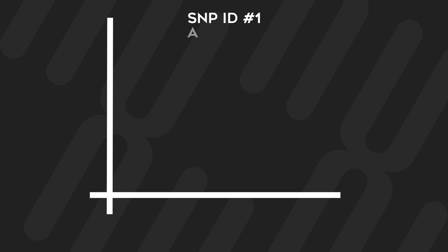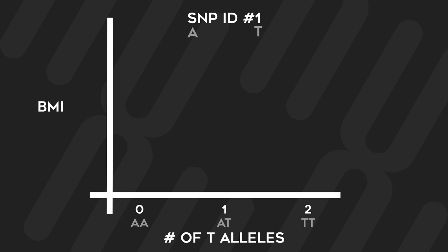Next, the actual association analysis is done. For every SNP in the dataset, a regression analysis is performed, with each individual being a data point. For example, let's say the program is performing a regression analysis for SNP ID number 1, which has two possible alleles, an A and a T. Each individual in the dataset then has the number of T alleles they have in their genome for that SNP plotted against the physical trait of interest, in this case BMI. Keep in mind that human DNA contains a copy from our father and a copy from our mother, meaning that a person's allele combinations for the SNP can be AA, AT, or TT. This would be coded as a 0, a 1, and a 2, respectively.